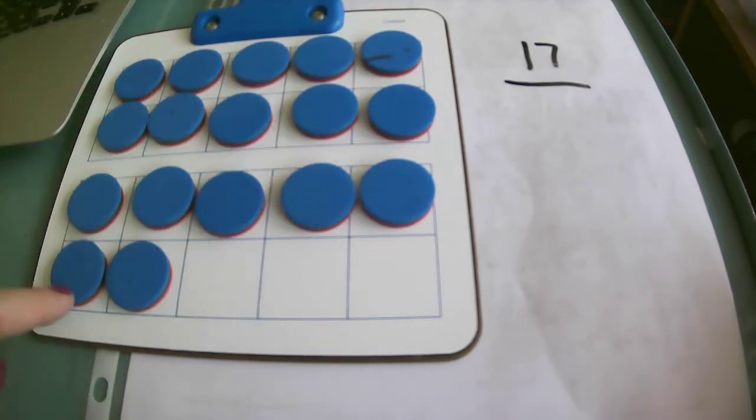And 1, 2, 3, 4, 5, 6, 7 counters. So I know that 10 and 7 are going to give me 17.